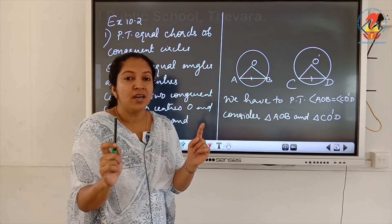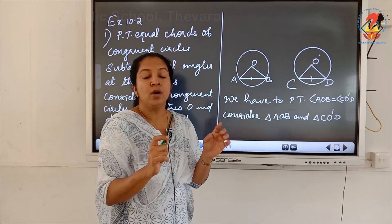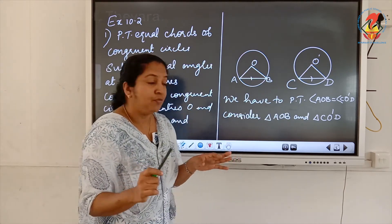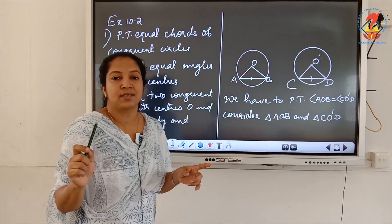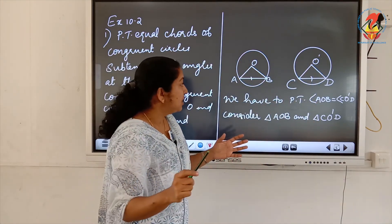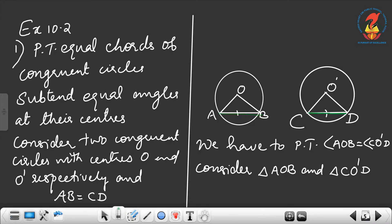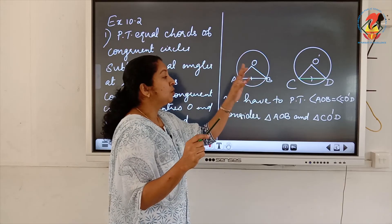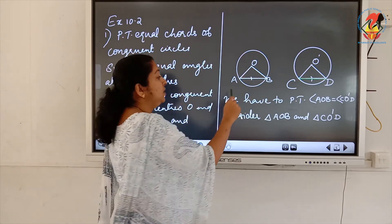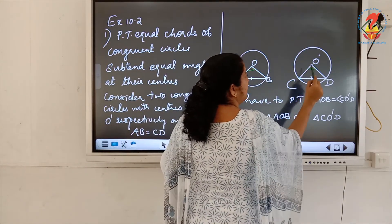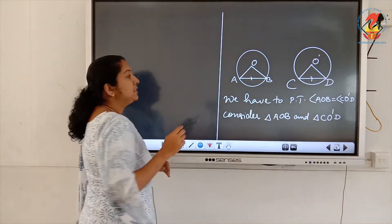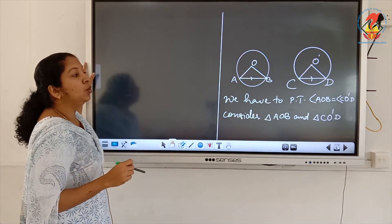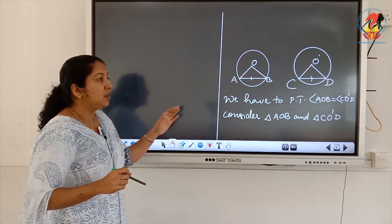Consider two congruent circles with centers O and O dash. AB and CD are chords such that AB equals CD. We have to prove angle AOB equals angle CO dash D.